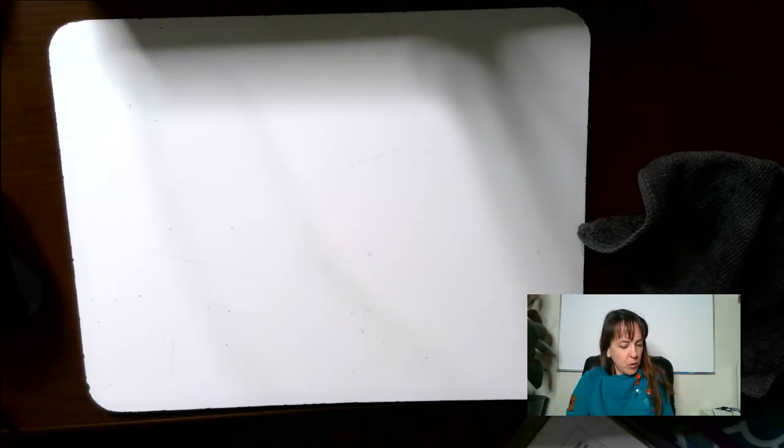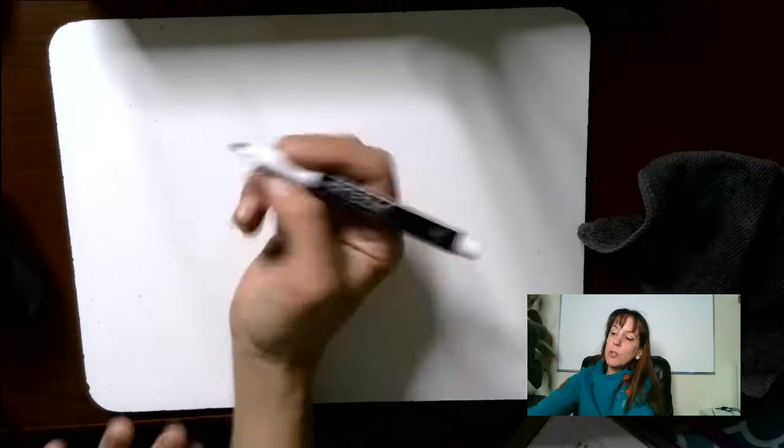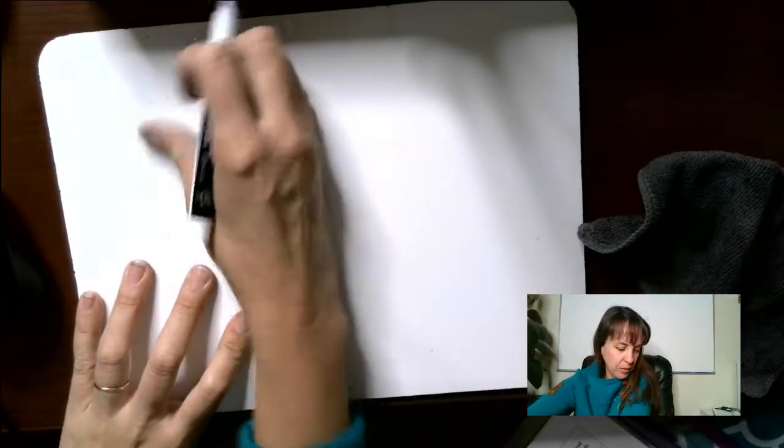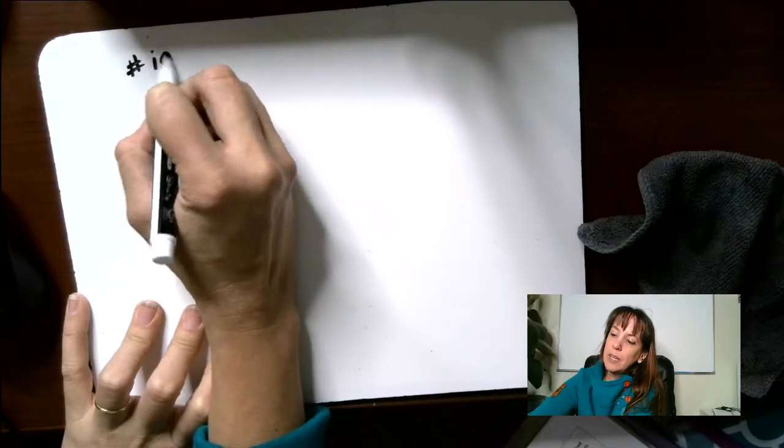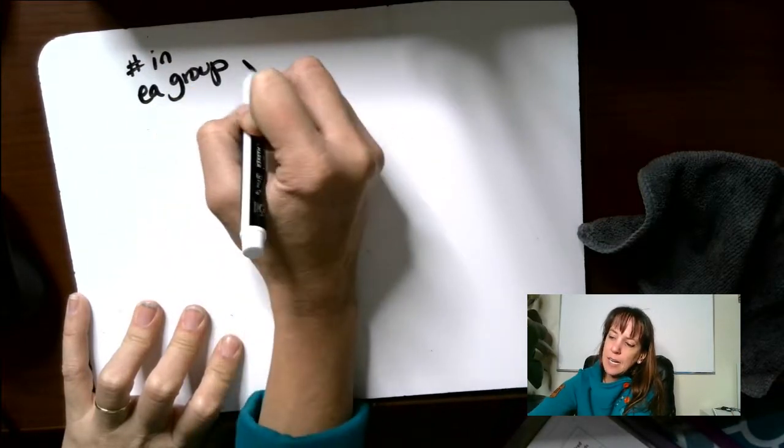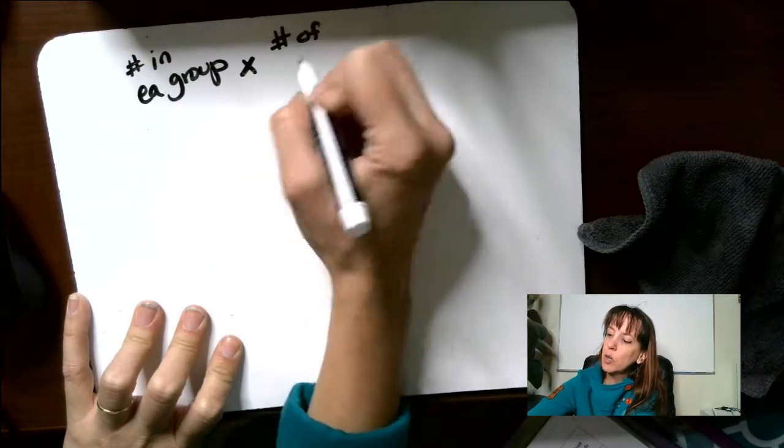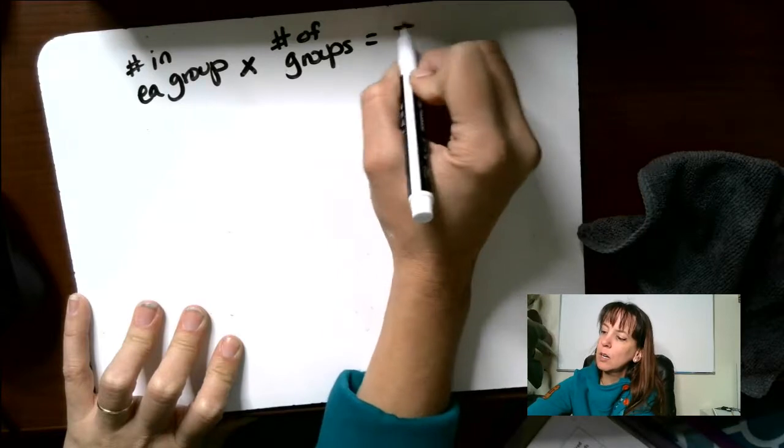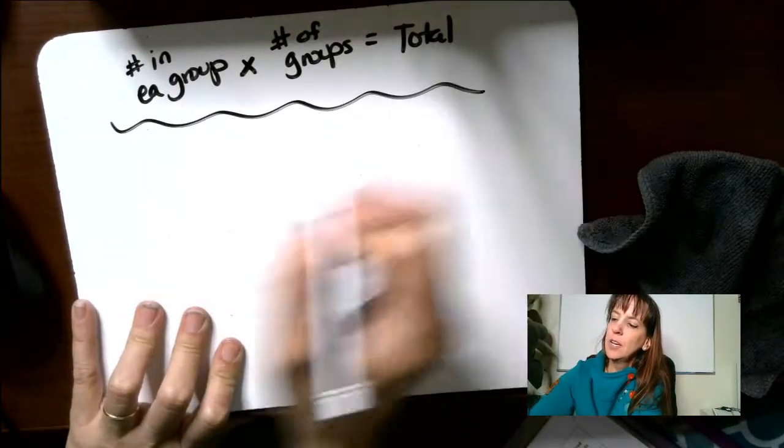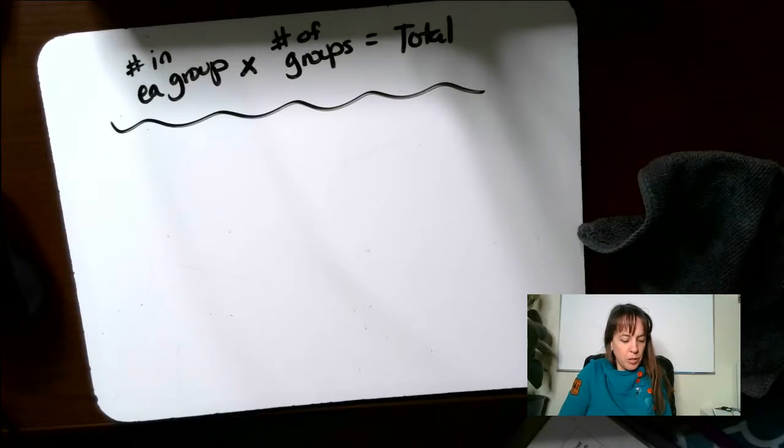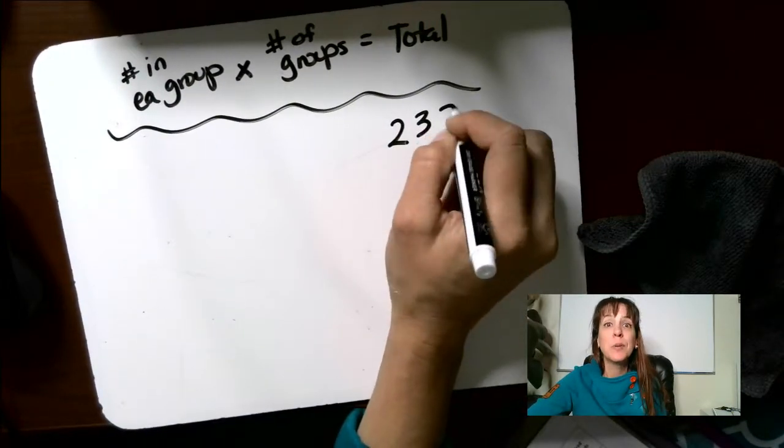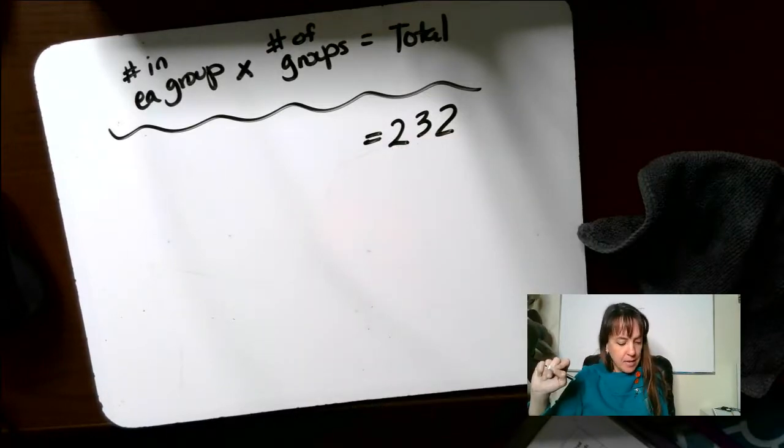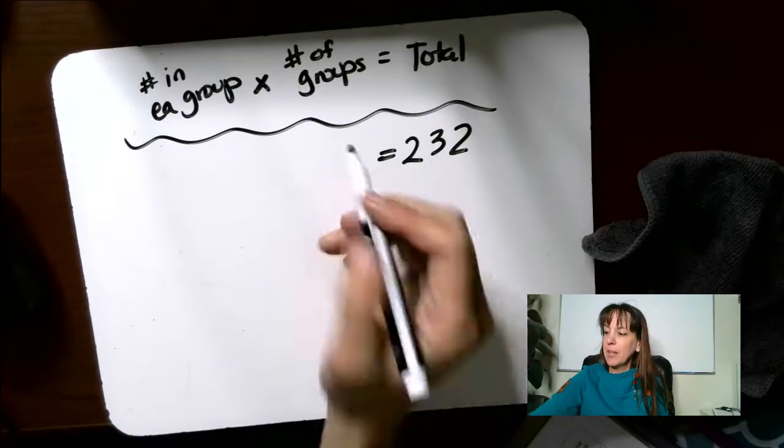Example number one. At Russell Middle School, there were 232 seventh grade students in eight classrooms. If there were the same number of students in each classroom, how many students would be in each seventh grade classroom? So the number in each group times number of groups equals our total. There were 232 students total in eight classrooms, so there were eight groups.